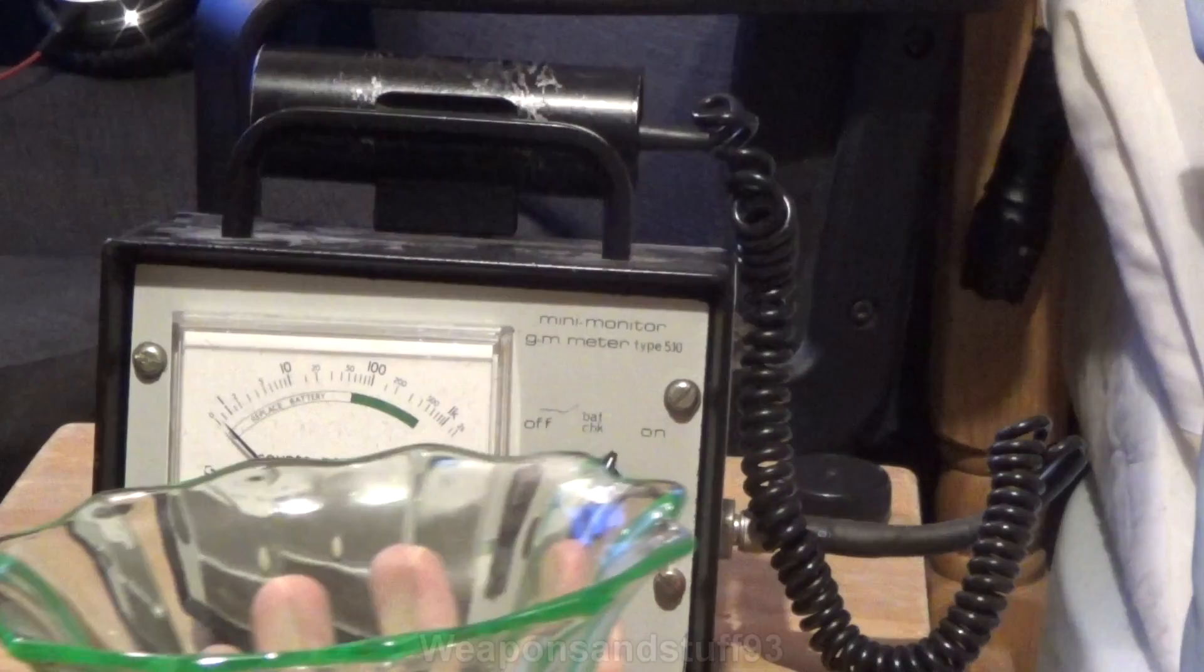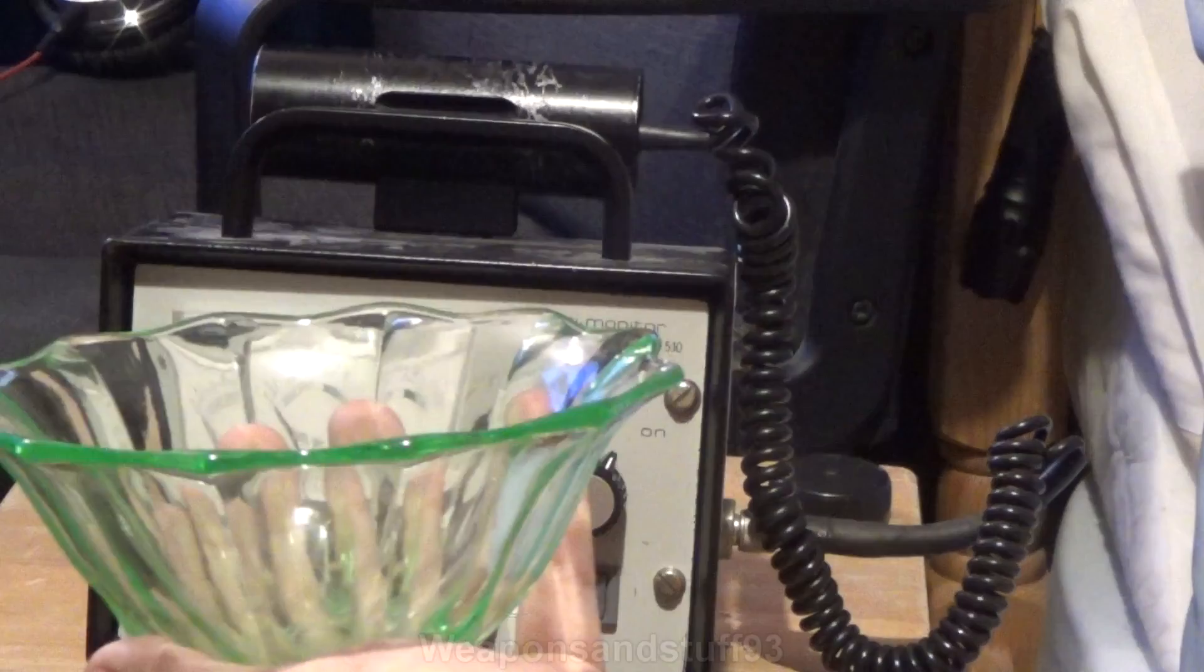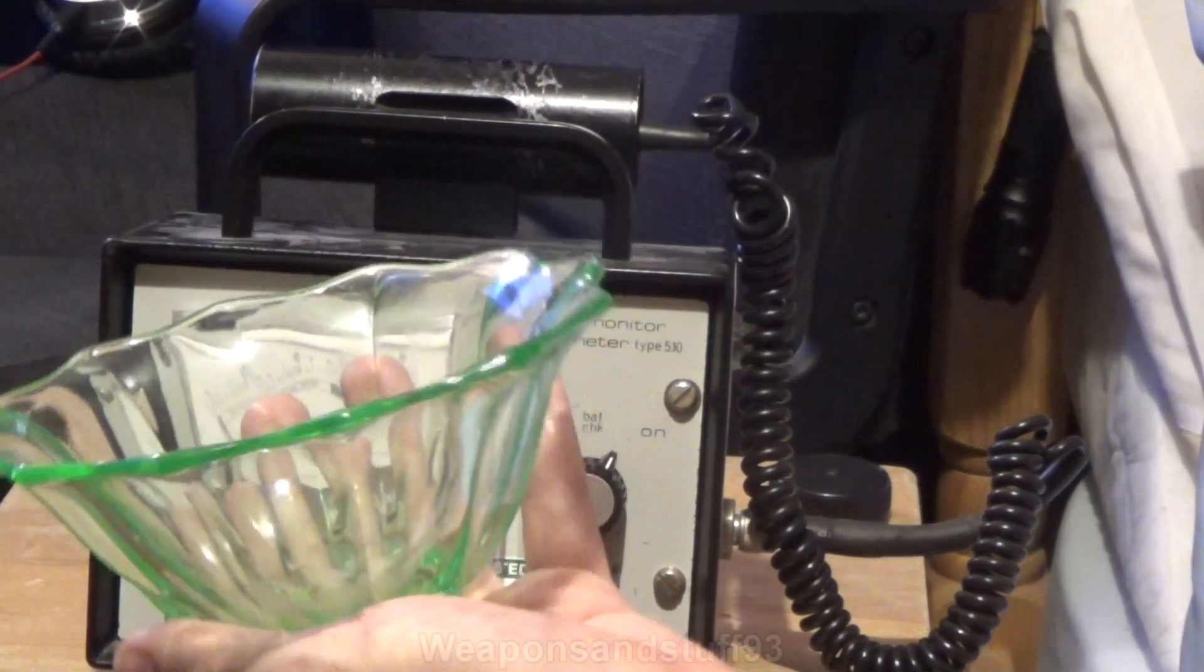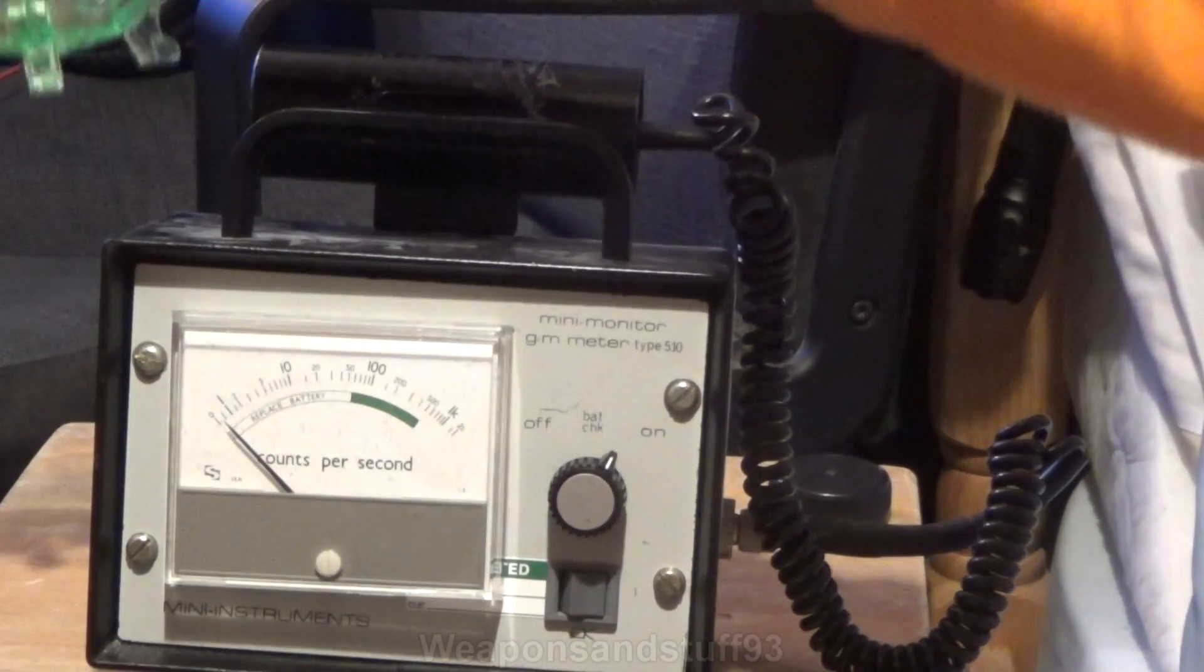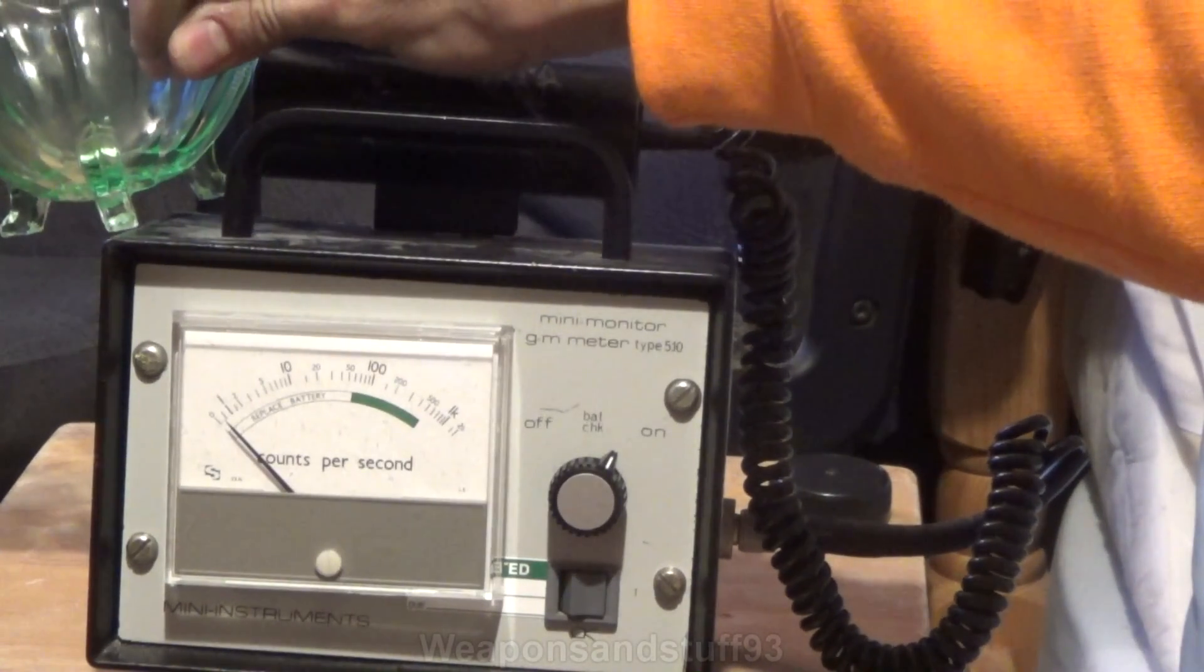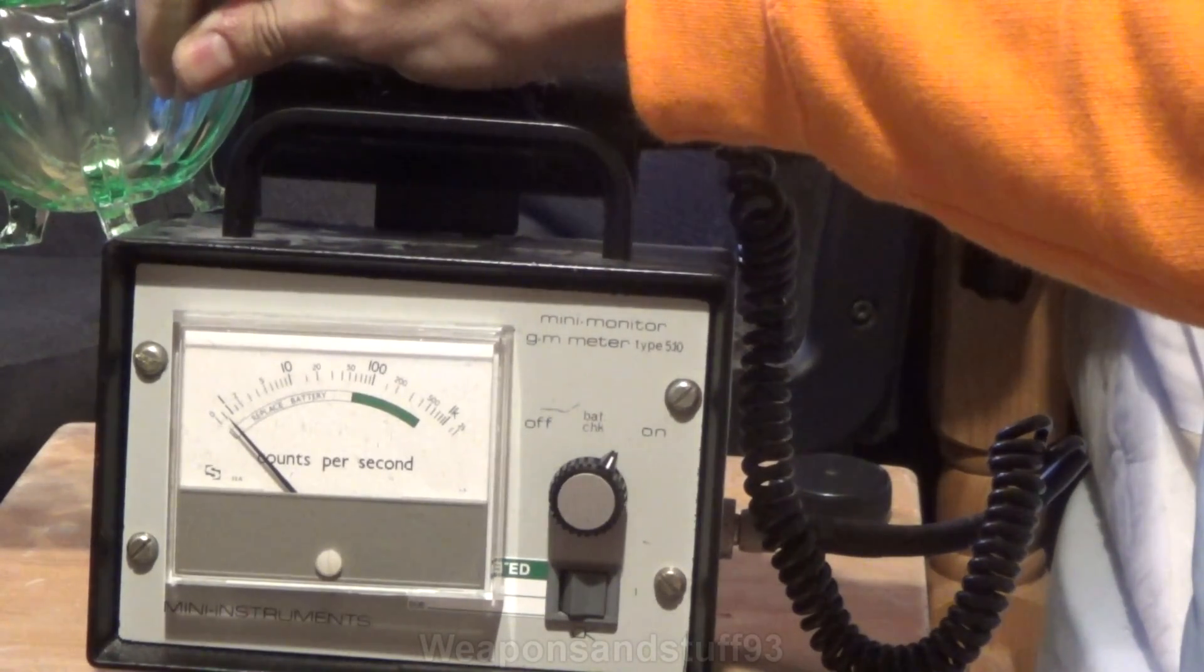This is a uranium glaze bowl. This used to be where people thought it was a good idea to make what they sometimes called Vaseline glass, using uranium glaze just to make it look pretty. This isn't all that radioactive if I put it in front of the Geiger counter. As you can see, very little activity.